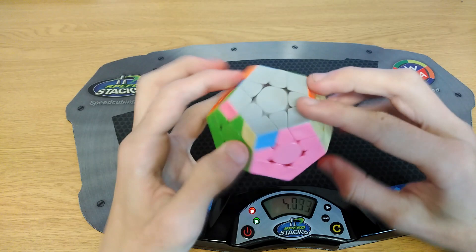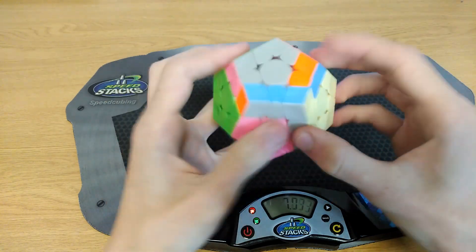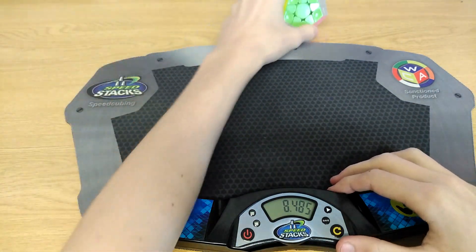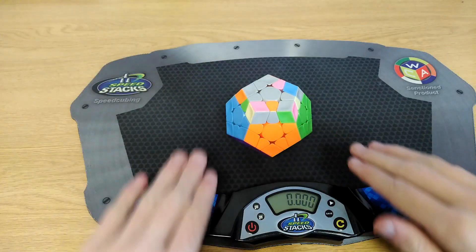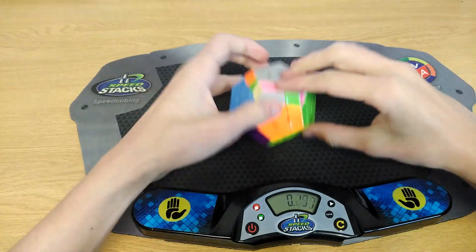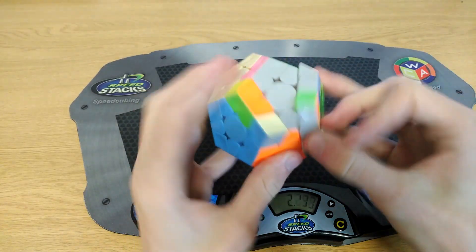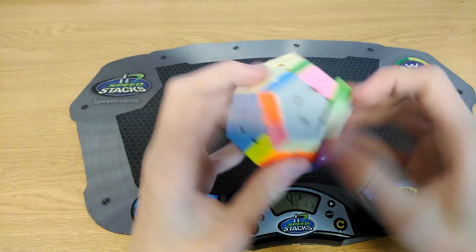And eventually you'll get your last layer down to 7 or 8 seconds, which is really good. And it will help a lot since most average megaminx solver's last layer is between 15 and 20 seconds. So it does help a little bit. And yeah, thank you guys so much for watching. Please like and subscribe.